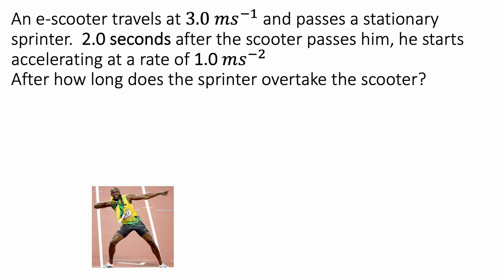An e-scooter travels at a constant velocity of three meters per second and passes a stationary sprinter. Two seconds after the scooter passes him, he starts accelerating, the sprinter does in other words, at a rate of a meter per second per second. After how long does the sprinter overtake the scooter?